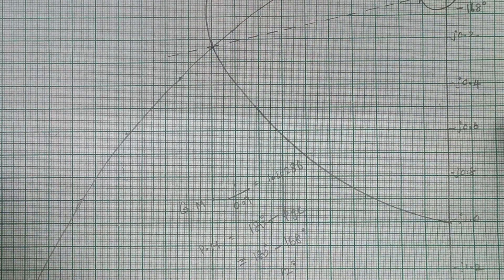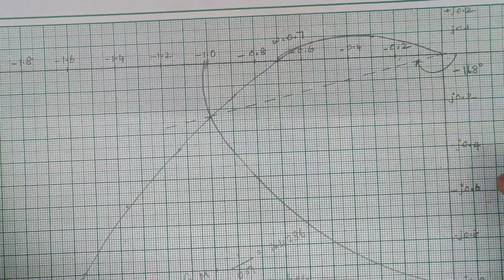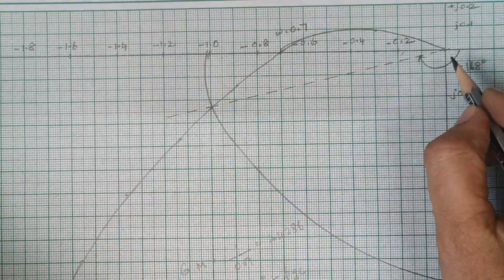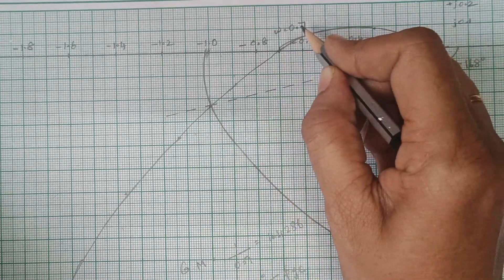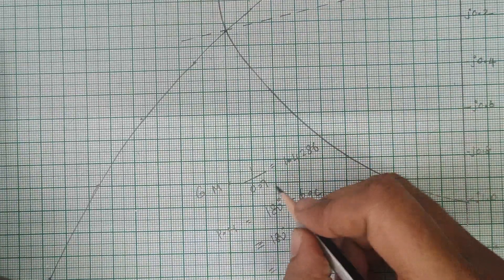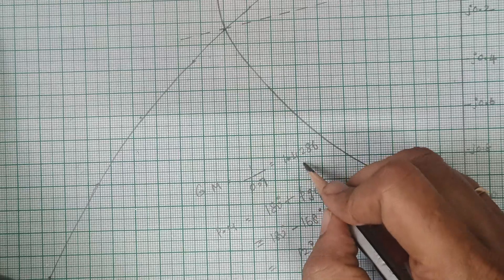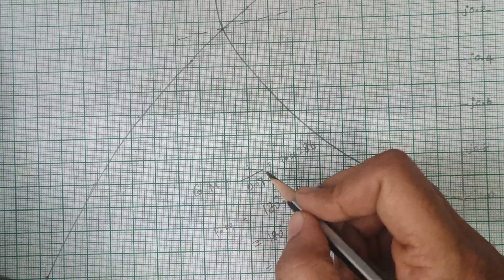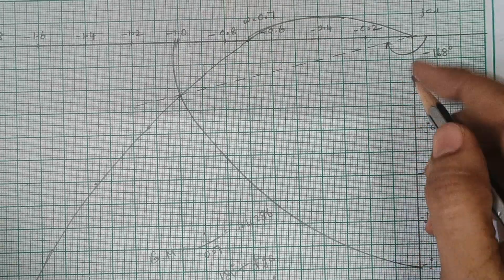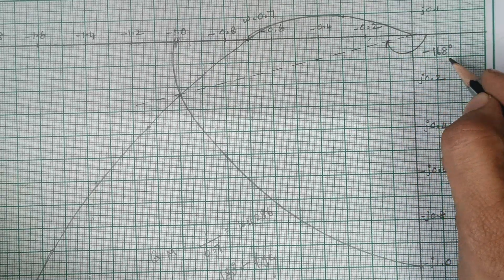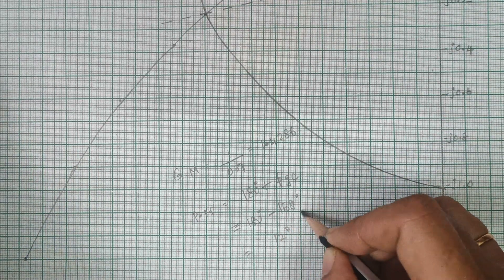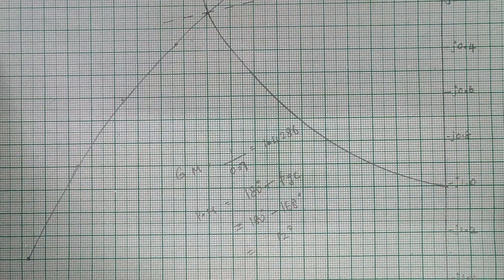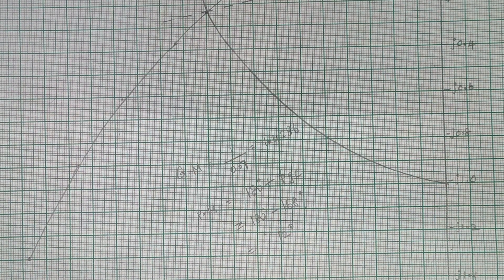Now we calculate the gain margin and phase margin. The real axis is intersected by the polar plot at omega equals 0.7, so the gain margin is 1 divided by 0.7, which equals 1.4286. For the phase margin, the angle was calculated as minus 168 degrees, so the phase margin is 180 plus phi_gc, which is 180 minus 168, giving a phase margin of 12 degrees. This concludes the problem. If you have any doubts, let me know in the comment section. Thank you.